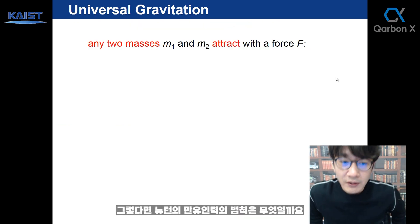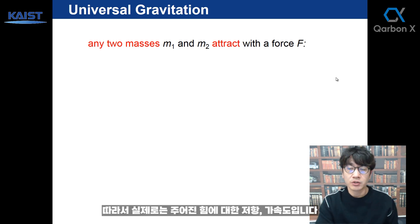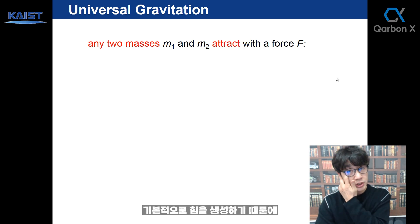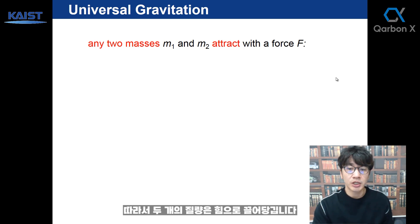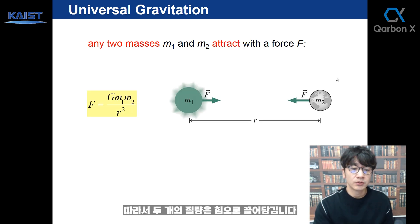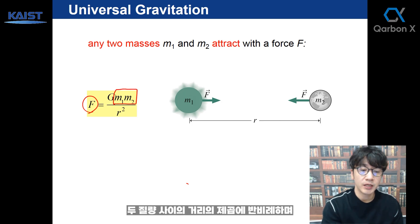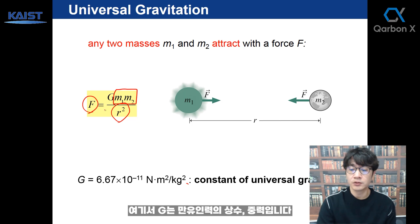What is Newton's universal gravitational law? We found that any two masses M1 and M2 attract with a force. Mass is related to inertia — resistance to acceleration with a given force. Not only is mass related to inertia, but it also generates force. Any two masses attract with a force. This is universal gravitation — force is always attractive. The magnitude of force is proportional to the product of the two masses and inversely proportional to the square of the distance between the two bodies. G is the constant of universal gravitation.